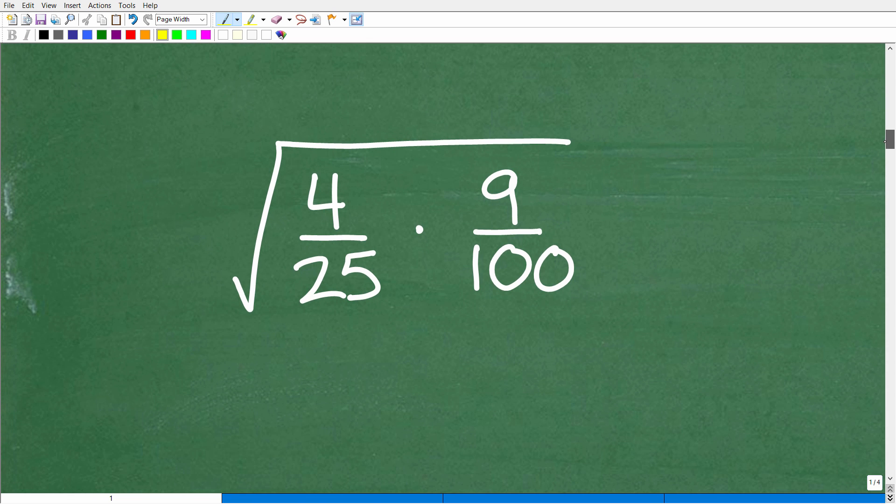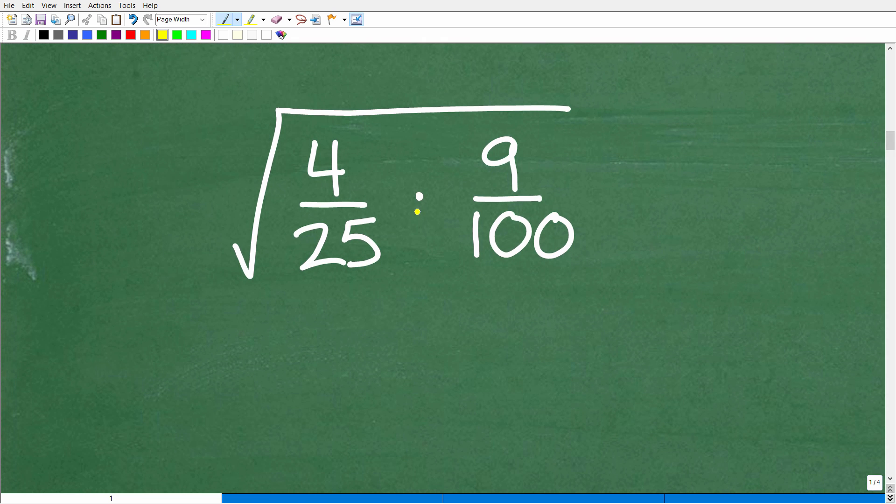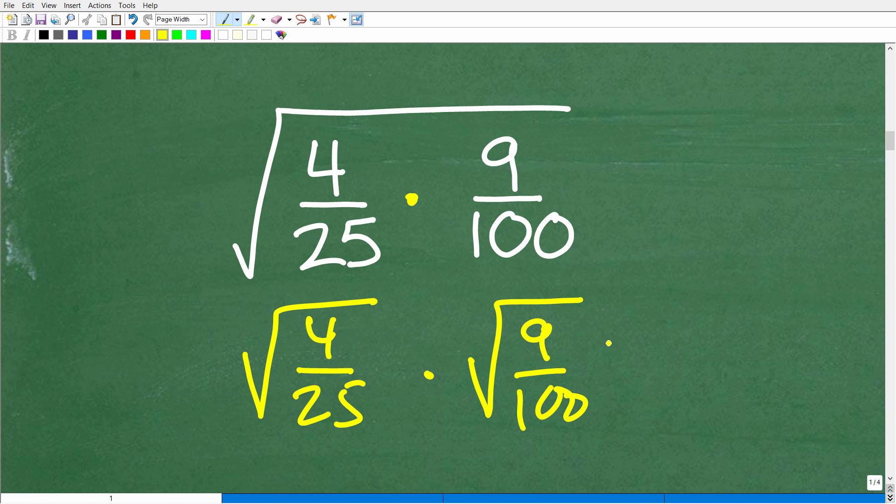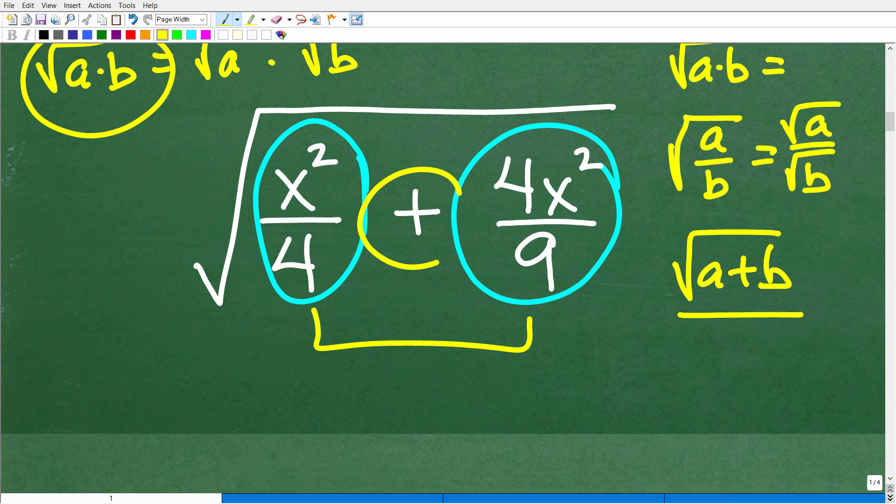So if this was the problem, if we were multiplying instead of adding, we're not, our problem is addition. But if this was a multiplication problem, then we could break these individual fractions up. This would be the square root of 4 over 25 times the square root of 9 over 100. But the problem here is we don't have multiplication. We have addition.